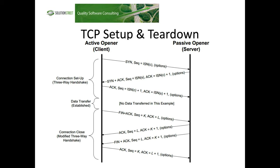TCP/IP is what we use as developers to set up a connection 99% of the time. What TCP/IP does to set up the connection is called a three-way handshake: the client sends a SYN, the server sends back a SYN-ACK saying 'I got your SYN,' and then the client sends an ACK back. Three-way handshake — SYN, SYN-ACK, ACK — and now I have a connection. That's how I can be sure I have a connection.